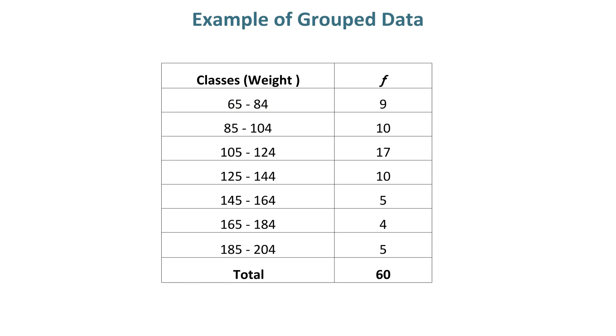Example of grouped data. In this example, there are 7 classes and a sample size of 60. The frequency is given in front of each class.